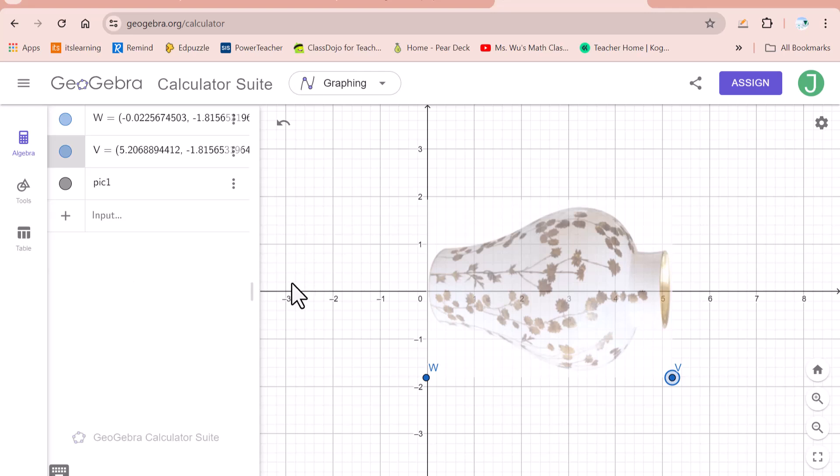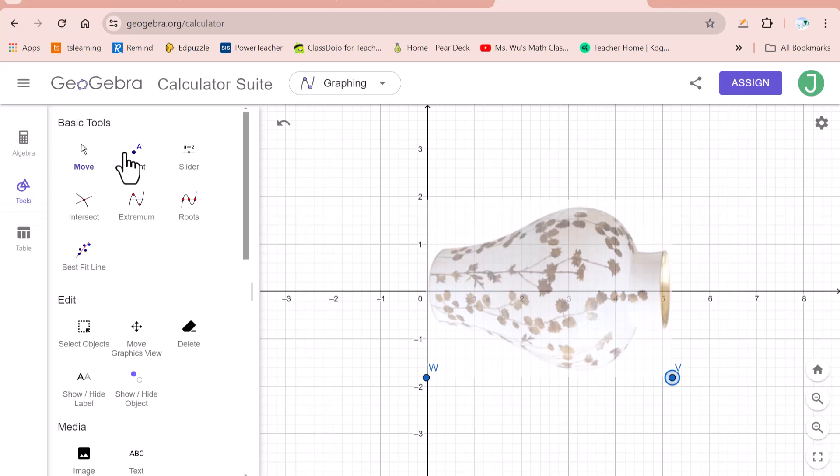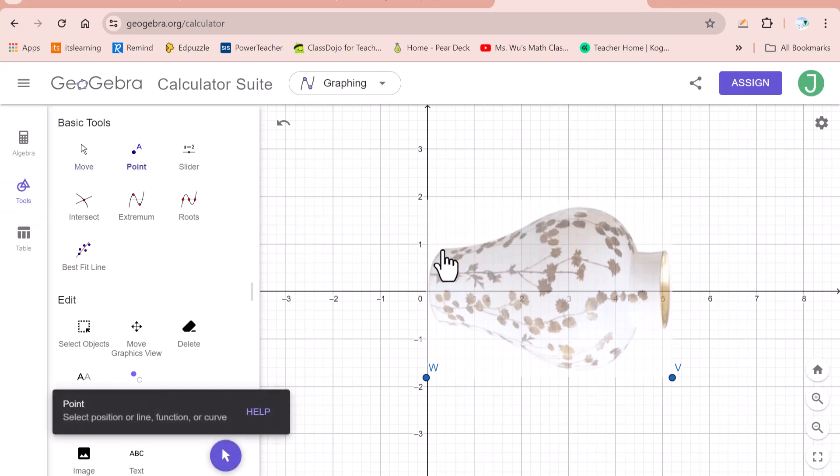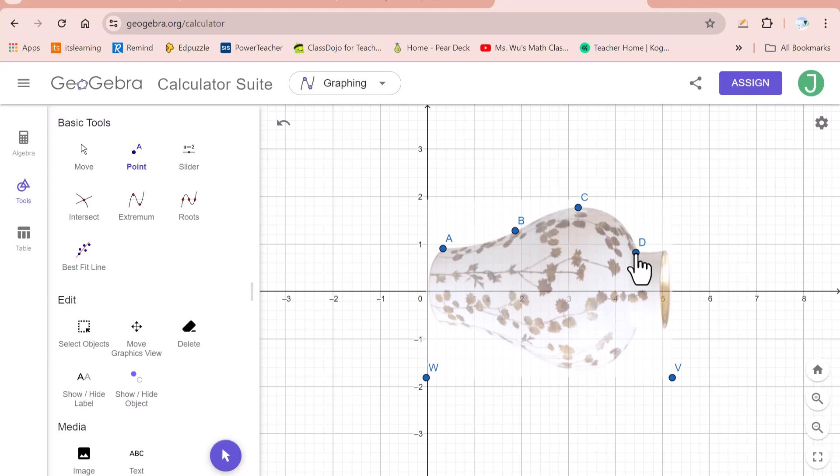Now I will add the points. So click this tool. Point. I found four points on the upper boundary of this vase. Because I want to use the cubic function to model this curve.